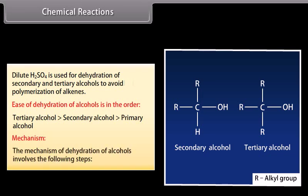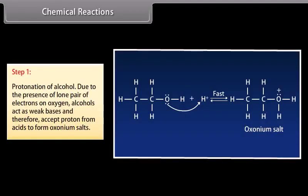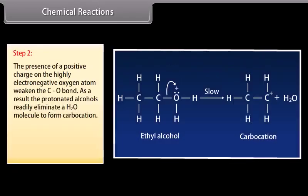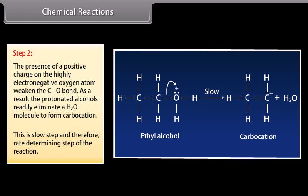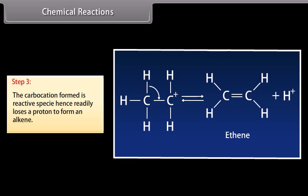Mechanism: the mechanism of dehydration of alcohols involves the following steps. Step 1 — protonation of alcohol: due to the presence of lone pair of electrons on oxygen, alcohols act as weak bases and accept a proton from acids to form oxonium salts. Step 2 — the presence of a positive charge on the highly electronegative oxygen atom weakens the CO bond; as a result, the protonated alcohols readily eliminate a water molecule to form a carbocation. This is the slow, rate-determining step. Step 3 — the carbocation, being a reactive species, readily loses a proton to form an alkene.